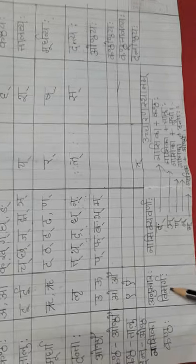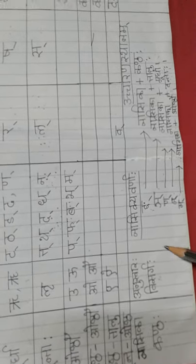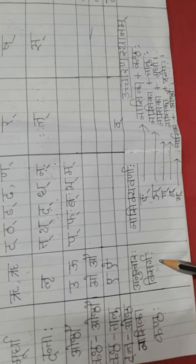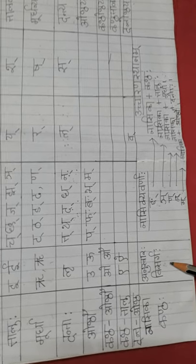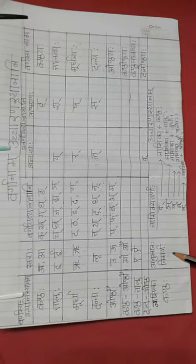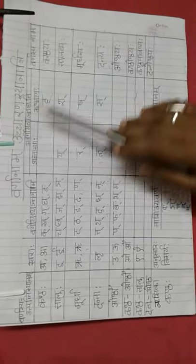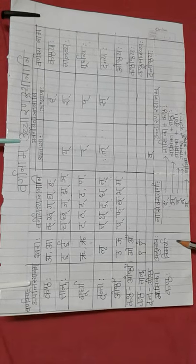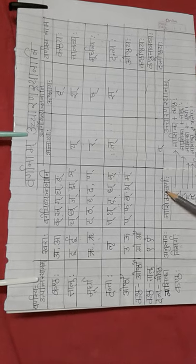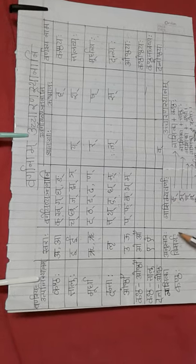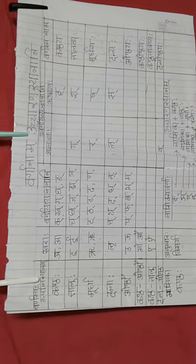Next, visarga. When we pronounce visarga in Sanskrit, the sound is coming as ha — naraha, gajaha. From kantha the sound is coming. This is all about Varnanam Ucharan Sthanani. Next class we will do matra. You will write this in your Sanskrit copy. Watch the video properly, understand it, and write it down in your Sanskrit copy very nicely. Om Namah Shivaya.